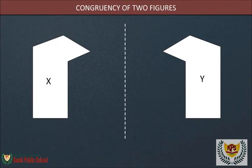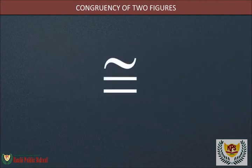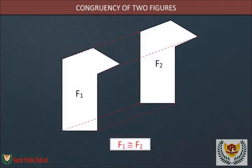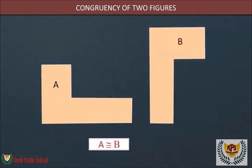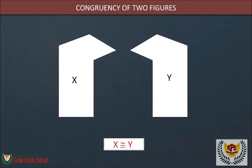The symbol ≅ is used to indicate congruent. Thus, F1 is congruent to F2, A is congruent to B, and X is congruent to Y in the above figures.